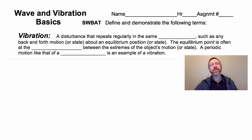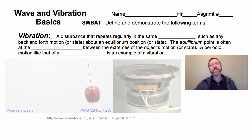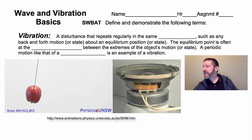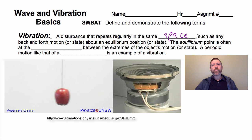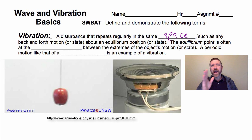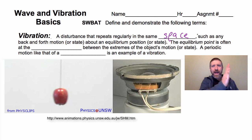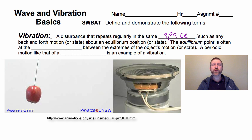Let's start off with a couple of simple definitions. In order to have waves, you have to have what are called vibrations. A vibration is a disturbance that repeats regularly in the same space, such as any back and forth motion or state about an equilibrium position or state. For example, a speaker goes back and forth about that equilibrium position.